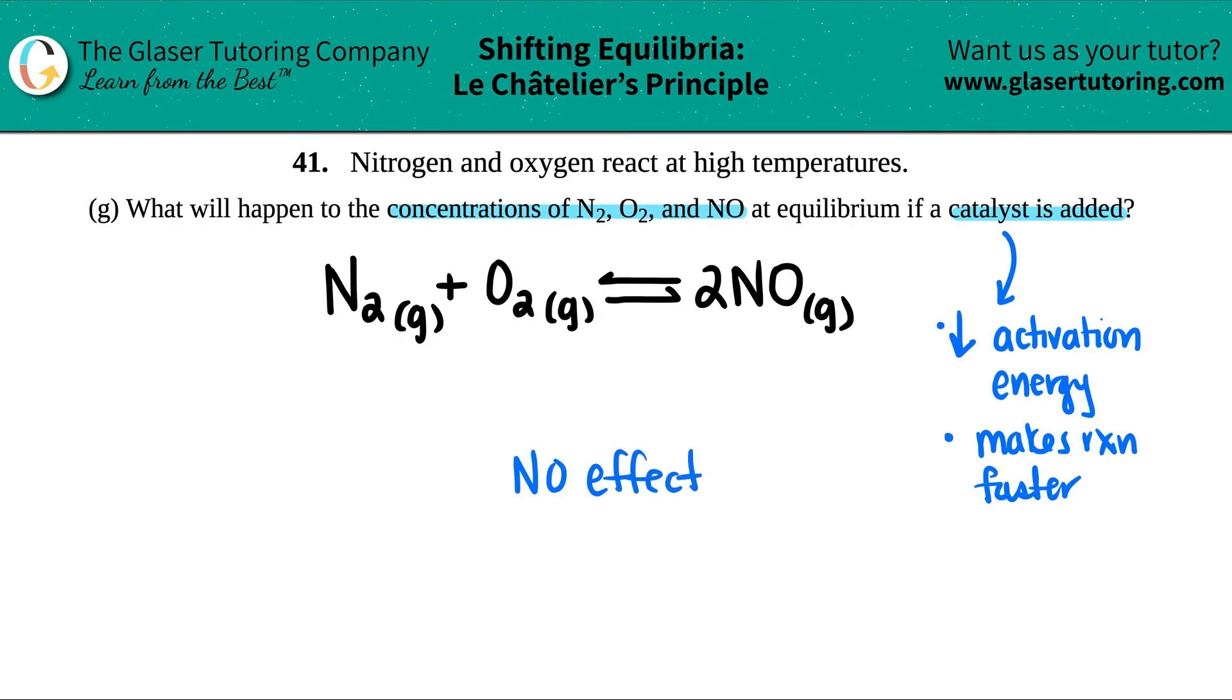So in this case, the concentrations, whatever they were, would remain exactly the same. Adding a catalyst has nothing to do with changing the amount of N2, O2, or NO. It just makes it go faster. And that's it.